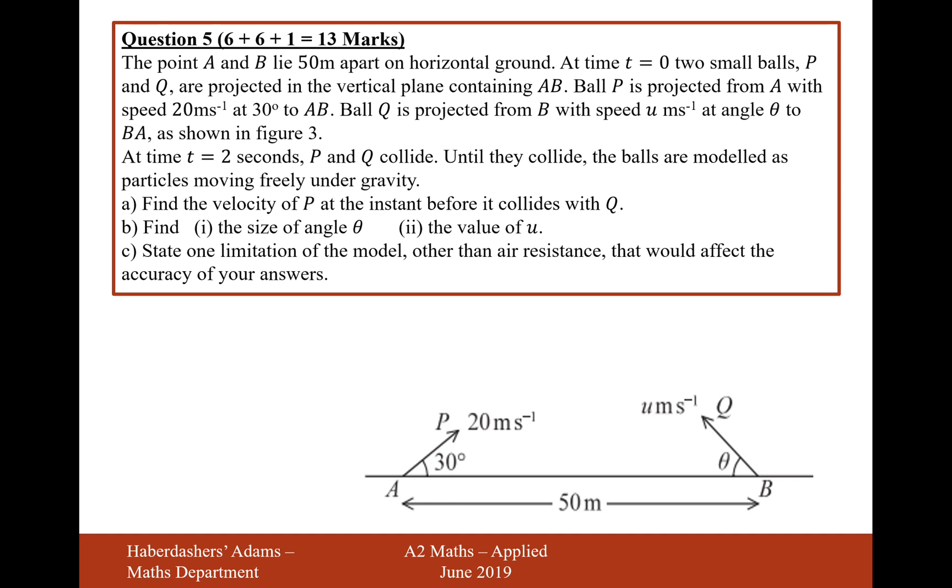The points A and B lie 50 metres apart on a horizontal ground. At time t equals zero, two small balls, P and Q, are projected in a vertical plane containing AB. Ball P is projected from A with a speed of 20 metres per second at 30 degrees to AB. Ball Q is projected from B with a speed U at an angle theta to BA as shown in figure three.